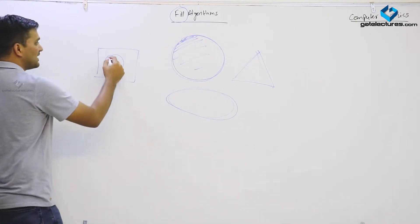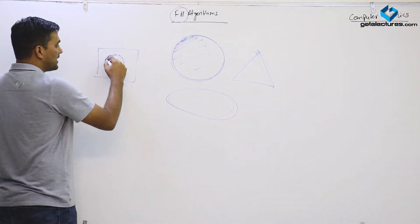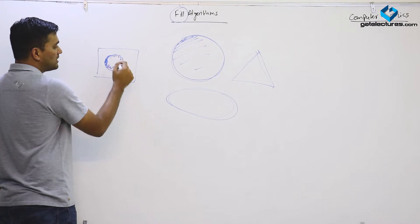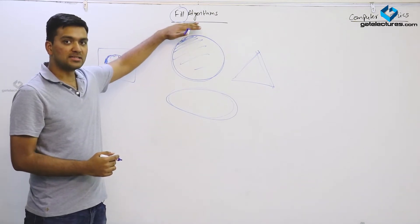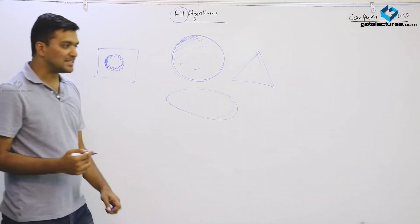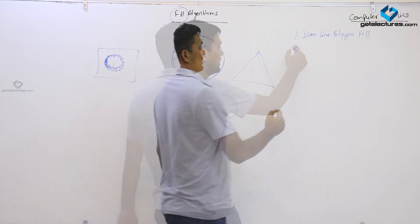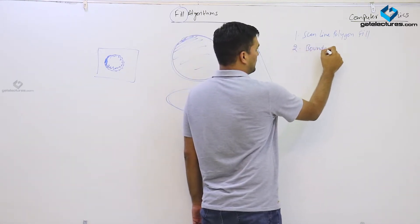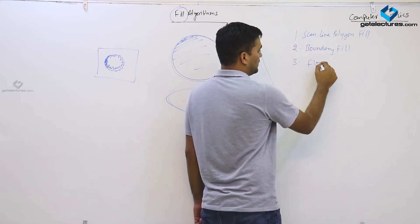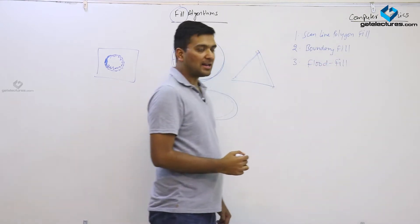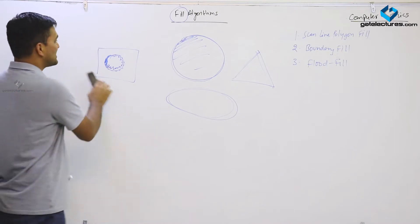How do we fill a shape? In a screen, we have just produced the boundary of a circle and now we have to show it as a painted circle — how should it look different from the rest of the screen? For that purpose, we will be discussing fill algorithms. There are three kinds: first, scan line polygon fill; second, boundary fill; and third, flood fill algorithm. Let us start with scan line polygon fill.